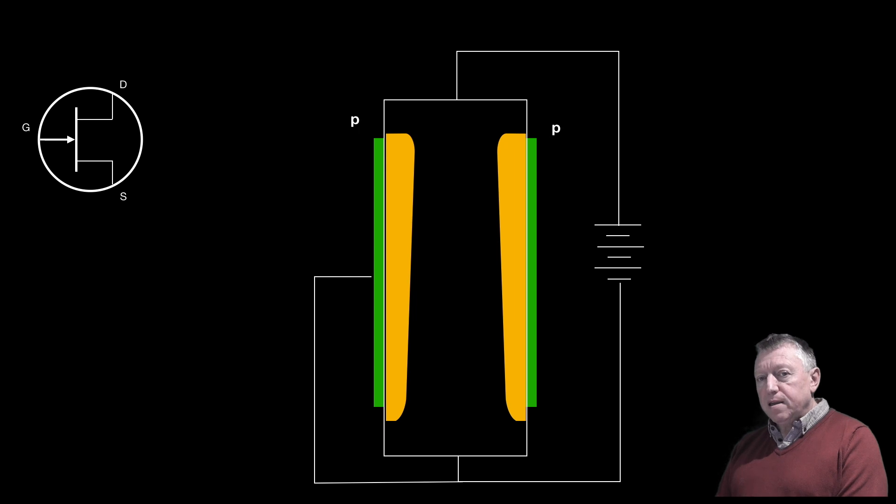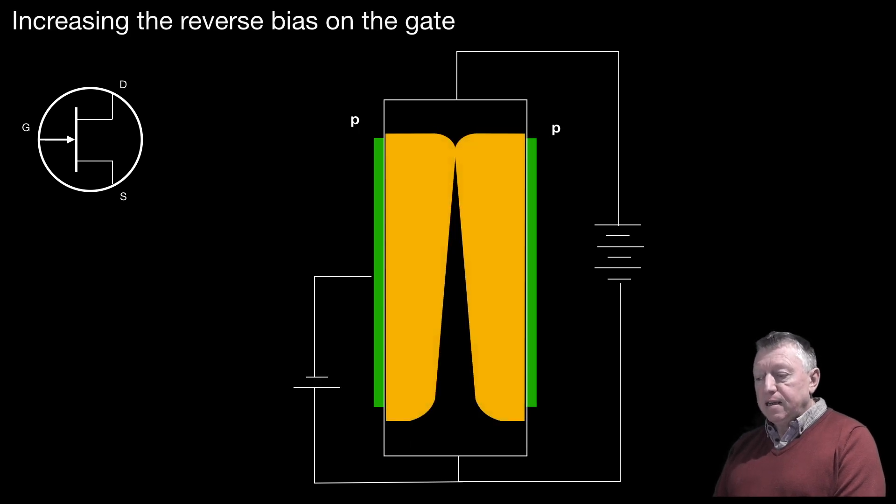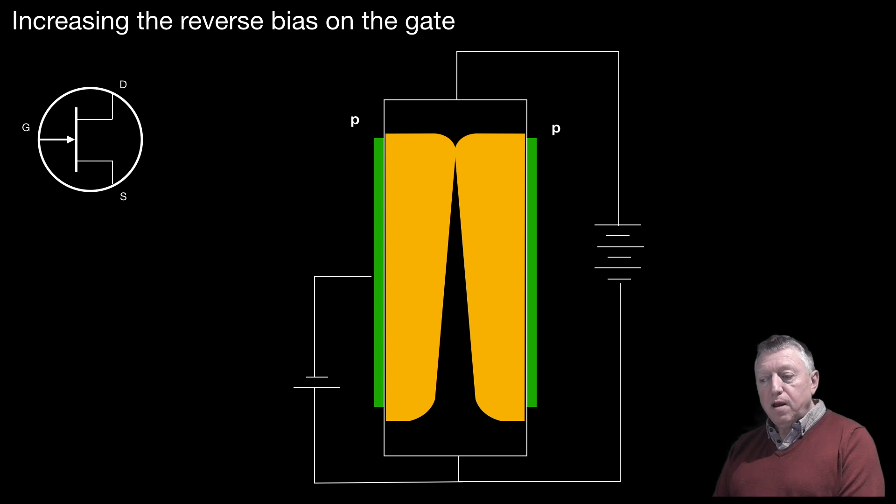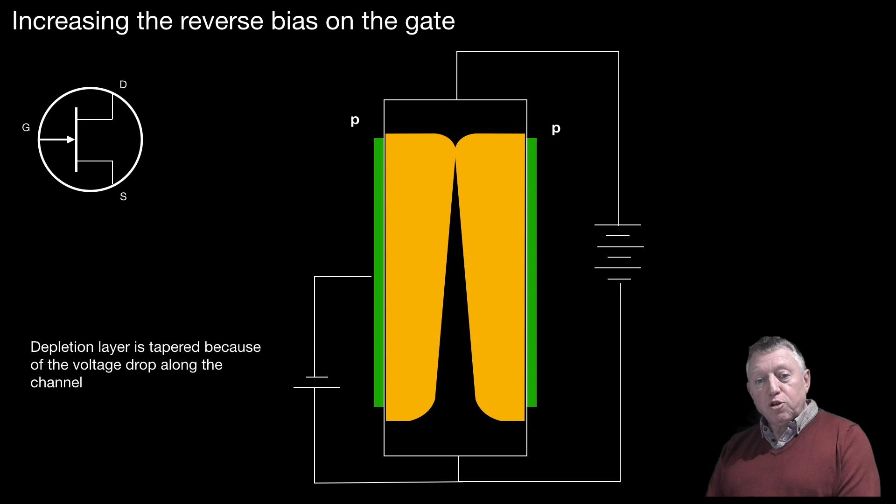If we bias the FET and we bias the gate by putting a negative, a net negative voltage on the gate, as shown, then that brings in the depletion layers. And now the N-channel is pinched off. It's tapered because of the voltage drop along the channel. And now what happens to the electrons? They try and flow up through the FET but they're pinched off because the FET is biased, the gate is negatively biased.